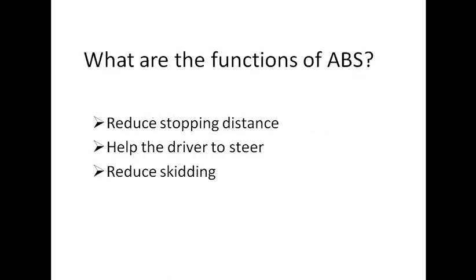What are the main objectives of ABS? The main objectives are to reduce the stopping distance, help the driver to steer, and reduce skidding. ABS can reduce the stopping distance by as much as 30%. It allows the driver to steer — if you are driving at high speed and there is no ABS system, no matter how much you steer, because of momentum you will not be able to steer the vehicle. Basically, ABS reduces the skidding of the vehicle.